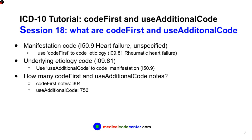For example, a manifestation code like heart failure unspecified, I-50.9, represents what the patient displays — what the patient's problem is. Under this manifestation code, you have a Code First note to remind you to also code the etiology. For example, I-09.81, rheumatic heart failure — that is heart failure caused by rheumatic fever — is the etiology code.